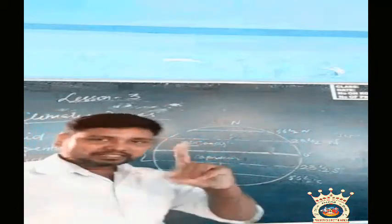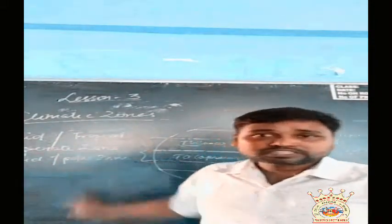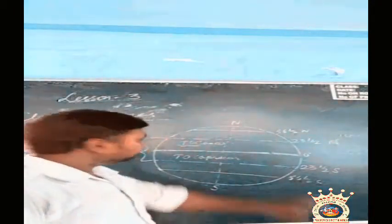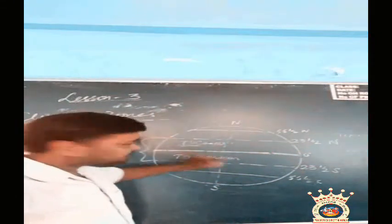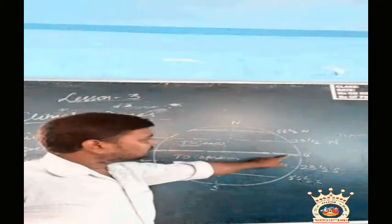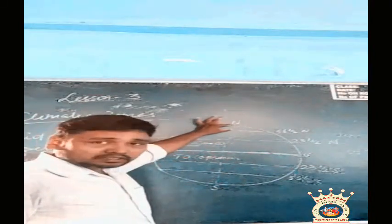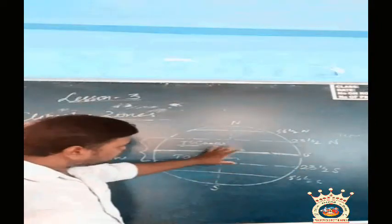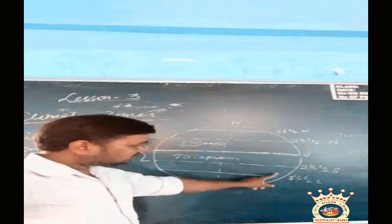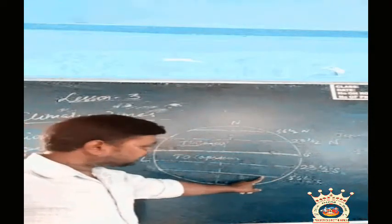So to summarize, we have three climatic zones: torrid zone, temperate zone, and frigid zone. Torrid zone is also called as tropical zone. Frigid zone is also called as polar zone because it is cold and it is in the polar region. From equator to 23 and a half degrees south and north is the torrid zone, then comes temperate zone, then comes polar or frigid zone. The same applies on both sides.